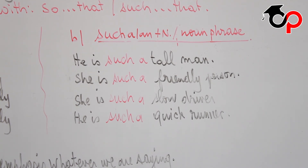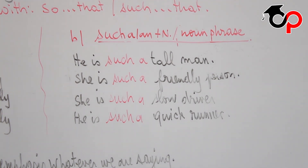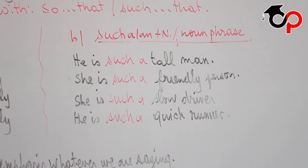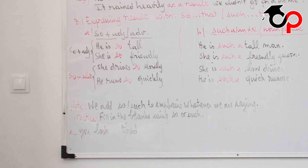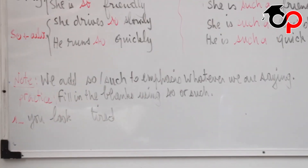Second sentence: she is so friendly. With such, it becomes she is such a friendly person — or such a friendly woman, such a friendly girl, and so on. She drives so slowly — slowly is an adverb. She is such a slow driver: slow is an adjective, driver is a noun. He runs so quickly — he is such a quick runner: quick is an adjective, runner is a noun. So the verb became a noun and the adverb became an adjective. We use so and such to emphasize whatever we are saying.